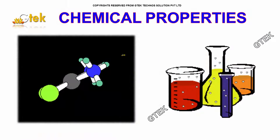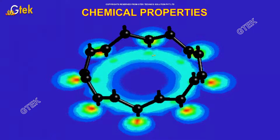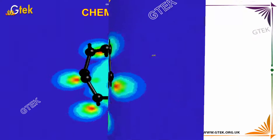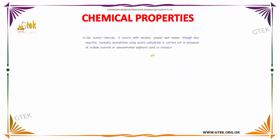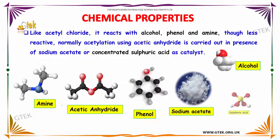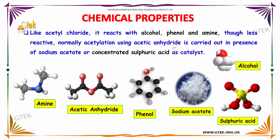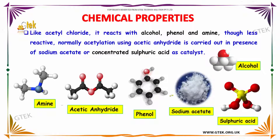Like acetyl chloride, acetic anhydride reacts with alcohol, phenol, and amine, though it is less reactive. Normally, acetylation using acetic anhydride is carried out in the presence of sodium acetate or concentrated sulfuric acid.